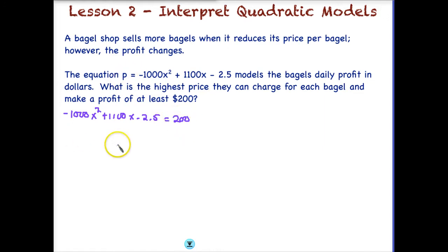So obviously in this case we need to again move the 200 over so that we can set this equation equal to zero, because we cannot use the quadratic formula unless our quadratic equation is set equal to zero. So if we move over 200 to the other side, we have to subtract it once again. And that means then here on the end we now have a minus 202.5, and now it equals zero.